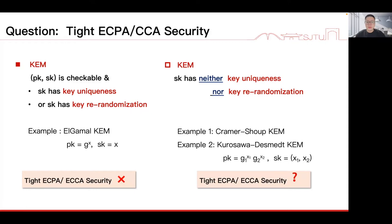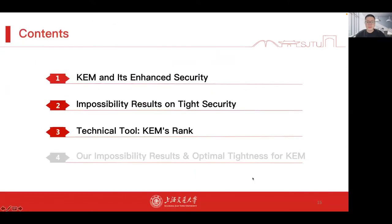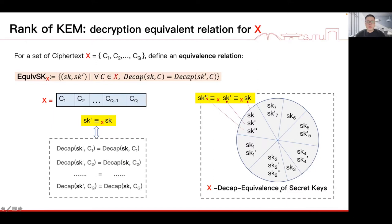Determining whether tightness impossibility holds for such KEM schemes needs new techniques. We show our main technical tool in this work, called KEM's rank, which is crucial in establishing our impossibility results. We study the equivalence of secret keys for KEM schemes when decapsulating a set of ciphertexts X. For a set of ciphertexts X consisting of C1, C2 to Cq, we define an equivalence relation on the secret key space. SK and SK' are decap-equivalent with respect to X if for every ciphertext C in X, the decapsulation of C using SK equals the decapsulation of C using SK'.